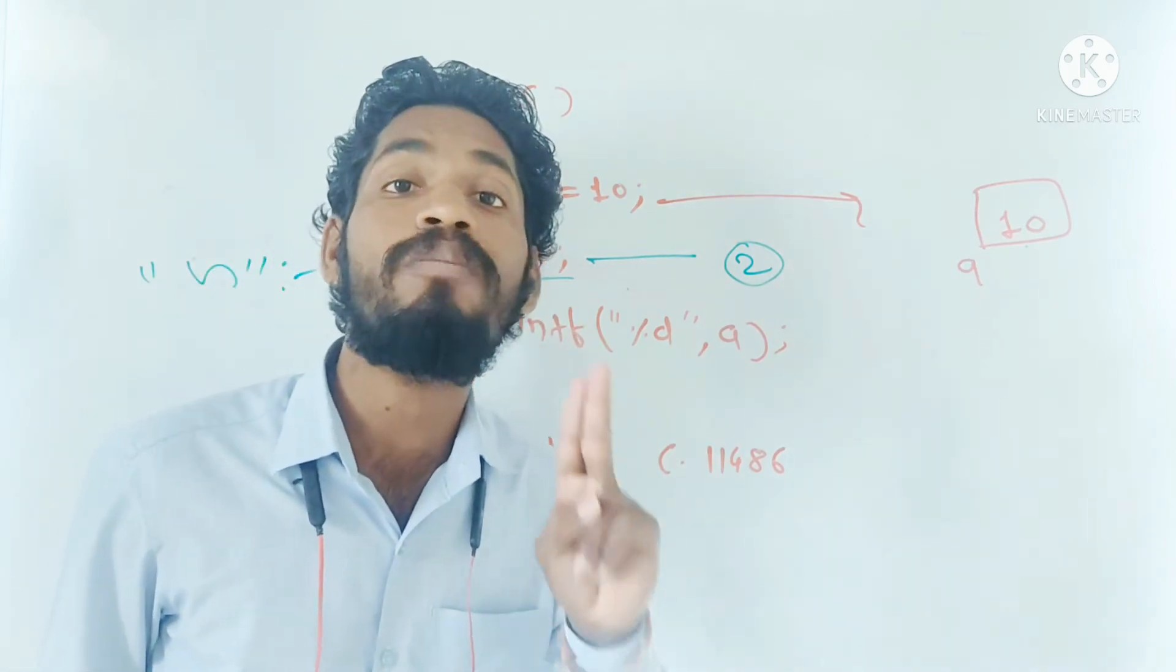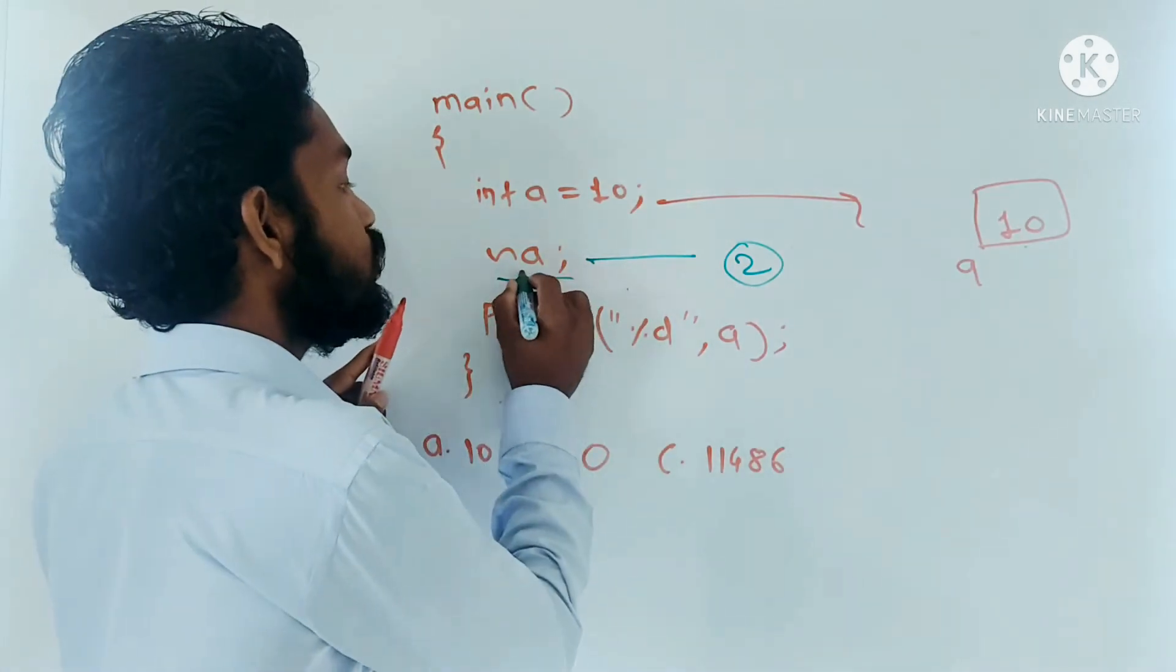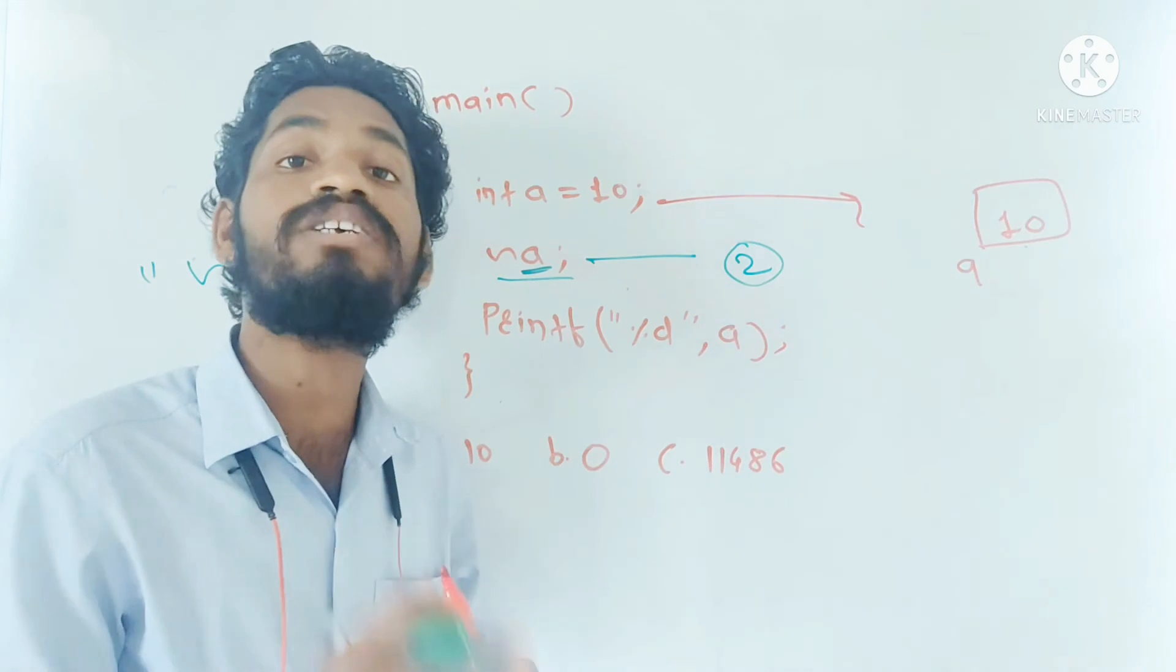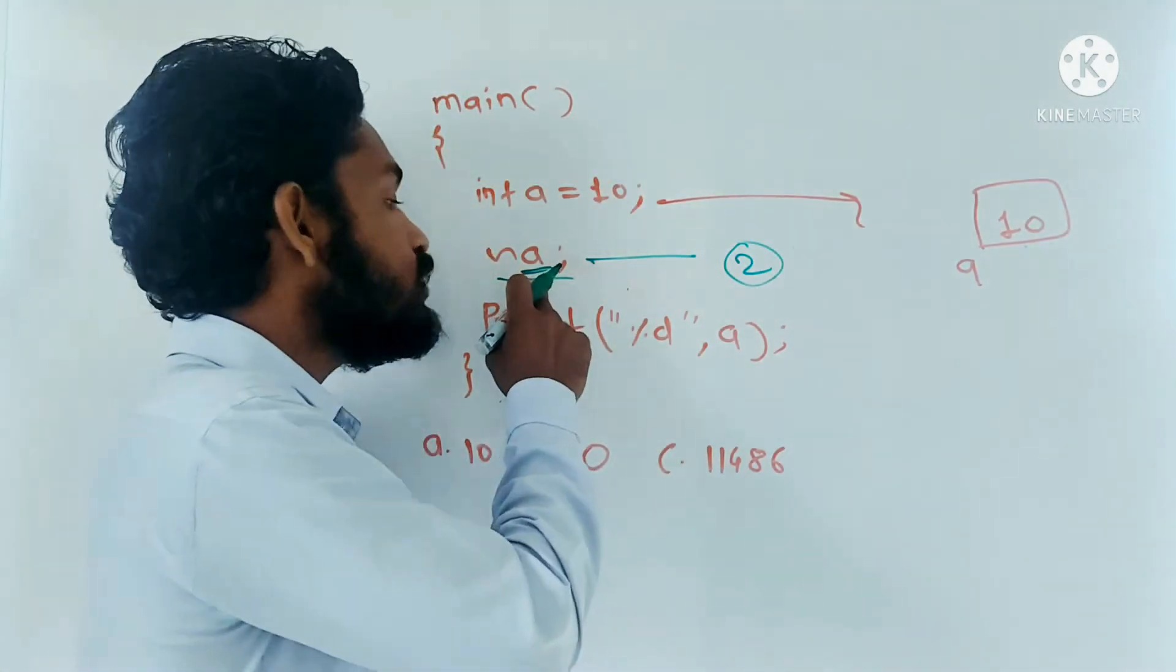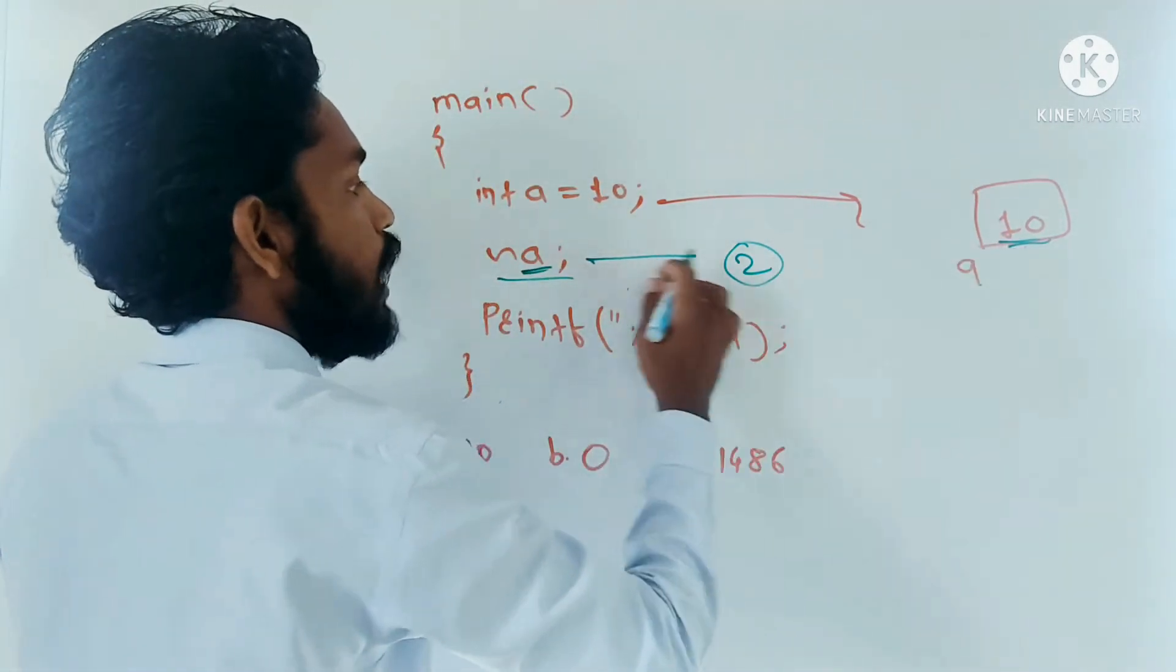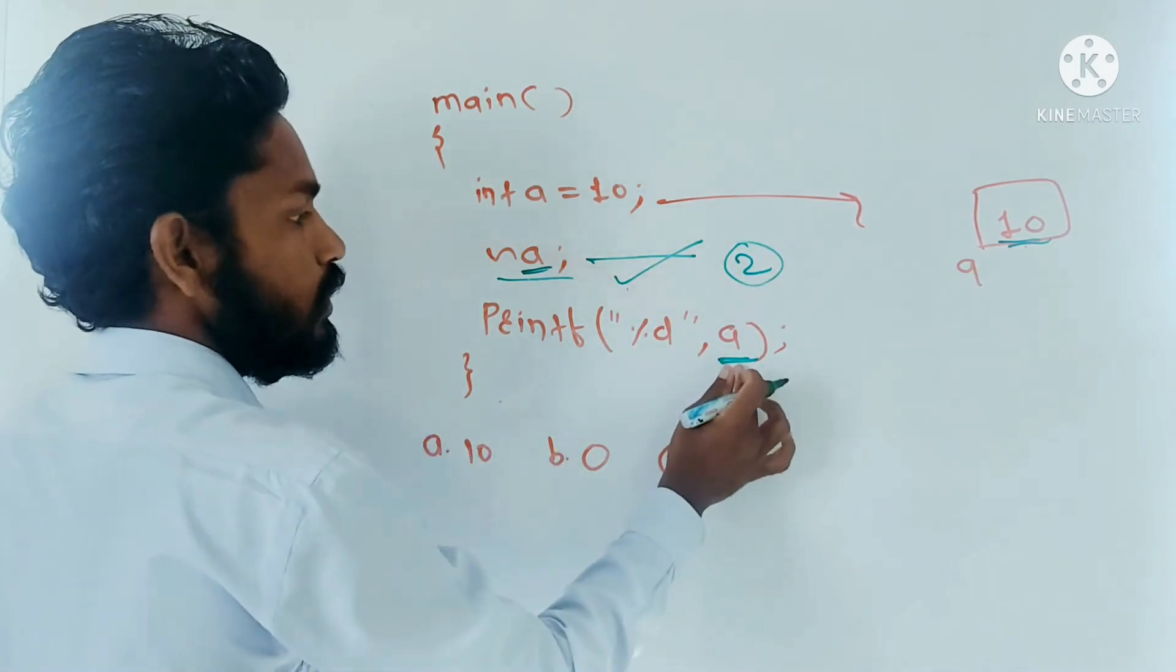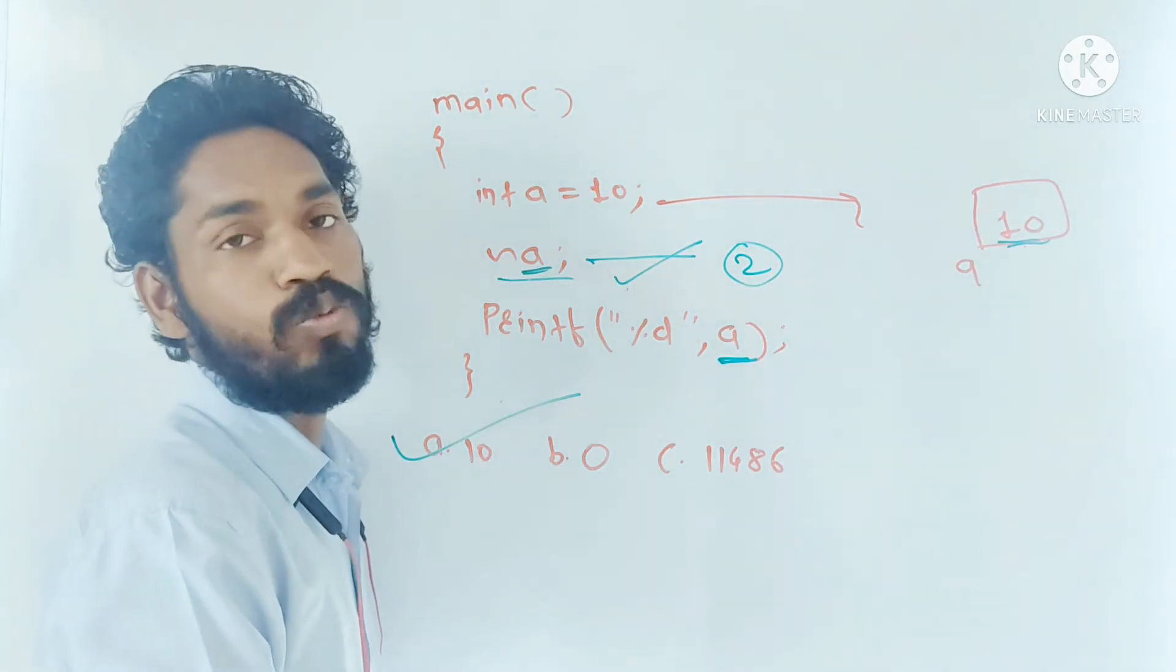Second and very important point: bitwise NOT operator never modifies operand. Means it will not change the content of variable a. That's why whatever the value available in variable a, it will remain the same after execution of this line also. So at the end, here we will get output as option A.